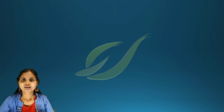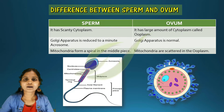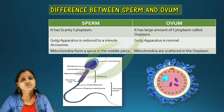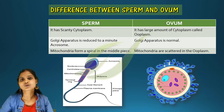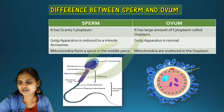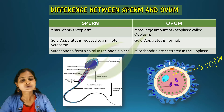In the case of sperm, the cytoplasm is very minimal — almost negligible. Whereas in the case of ovum, a large amount of cytoplasm is present, and that cytoplasm is called ooplasm.